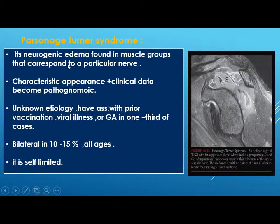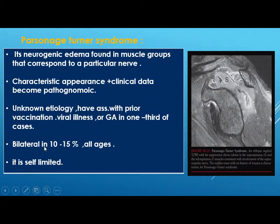Parsonage-Turner syndrome: the suprascapular nerve supplies infraspinatus and supraspinatus, while the axillary nerve supplies teres minor and deltoid. This syndrome shows neurogenic edema in muscle groups corresponding to a particular nerve. The appearance is characteristic but becomes pathognomonic only when combined with clinical data, because traumatic brachial plexus injury can give the same appearance. Clinically there is sudden onset of pain without history of trauma; etiology is unknown, often associated with prior vaccination or viral illness, bilateral in 10 to 15 percent, and self-limiting.